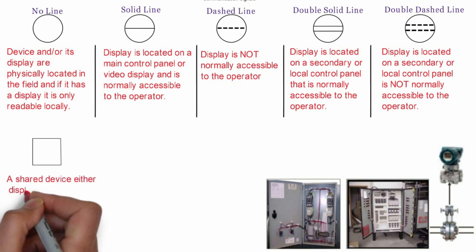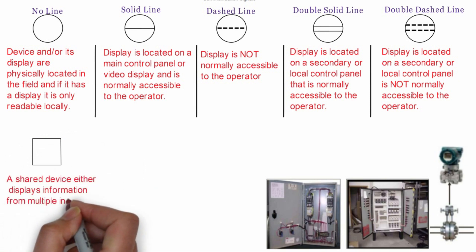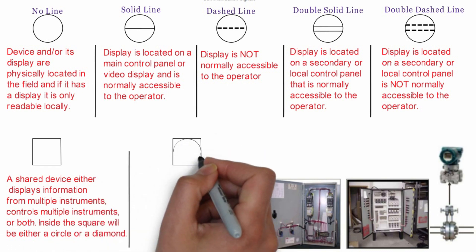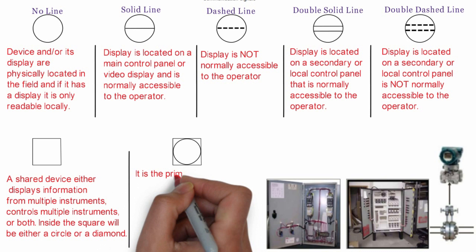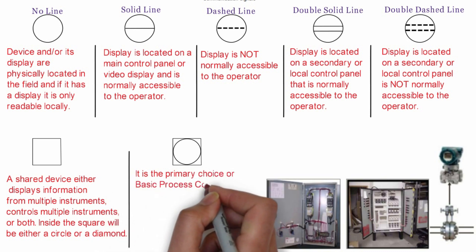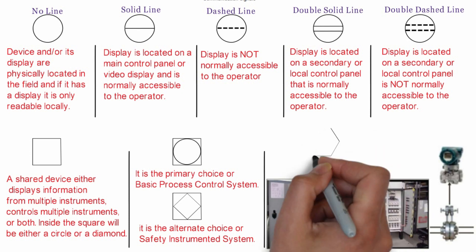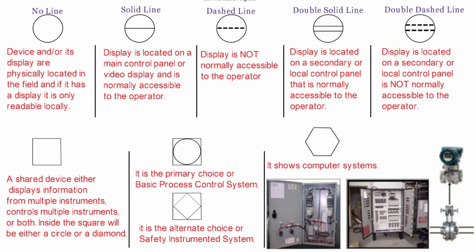Square bubble represents shared display. A shared device either displays information from multiple instruments, controlled multiple instruments, or both. Inside the square will be either a circle or a diamond. A circle represents that it is the primary choice or basic process control system. A diamond represents that it is the alternate choice or safety instrumented system. Hexagonal bubbles represent computer systems. Circular bubbles represent discrete instruments.